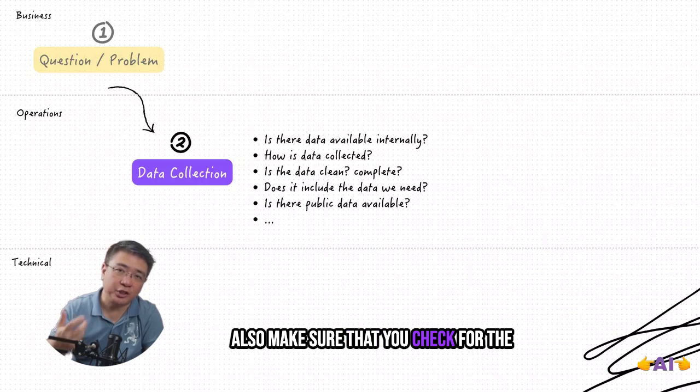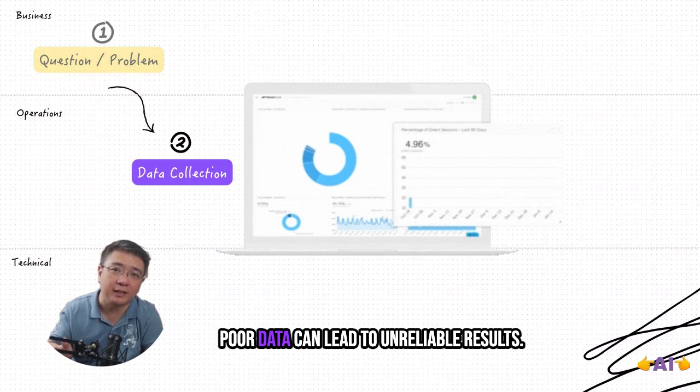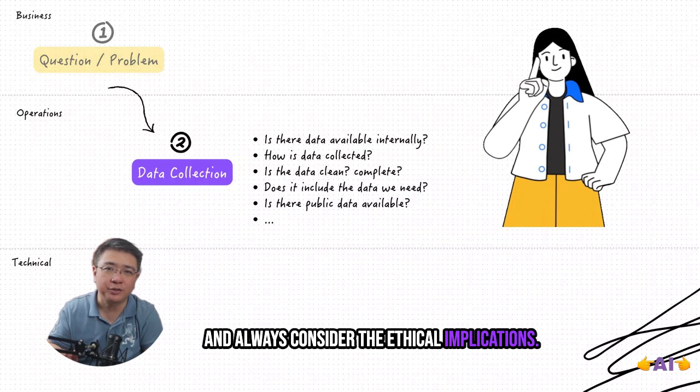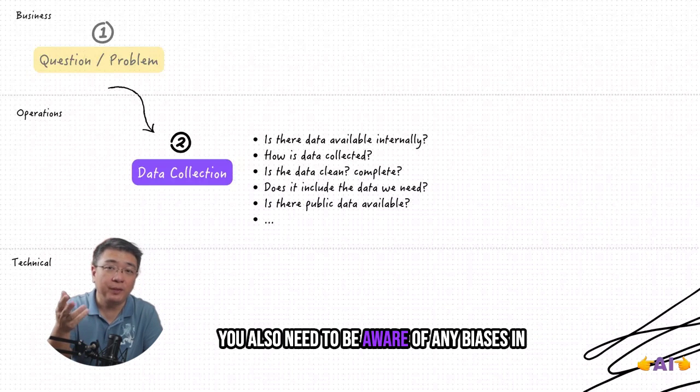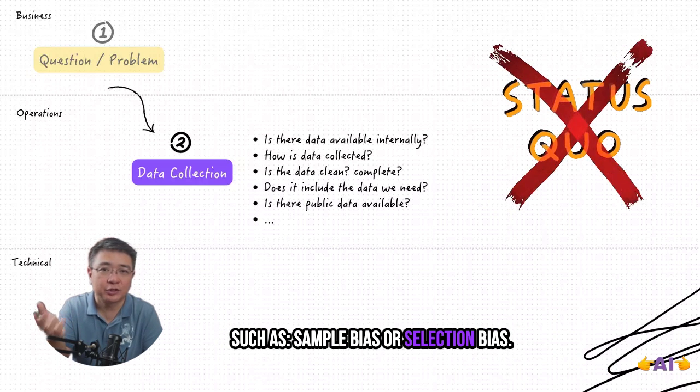Also, make sure that you check for the data quality in terms of completeness, accuracy, and consistent data because poor data can lead to unreliable results. And always consider the ethical implications and compliance with data protection laws like GDPR. You also need to be aware of any biases in your data that could affect the outcome such as sample bias or selection bias.